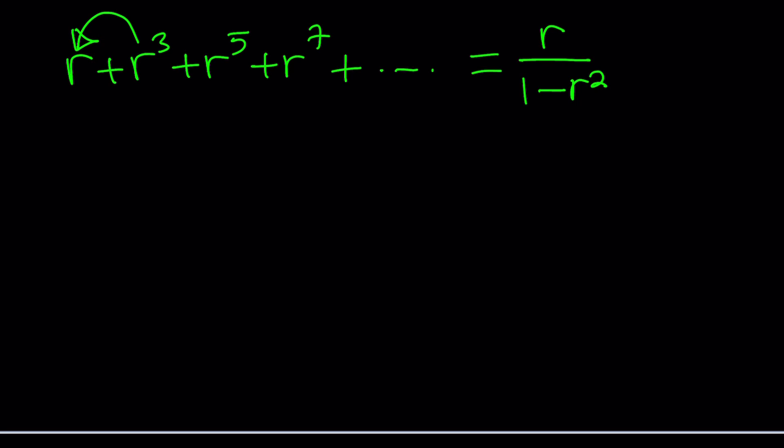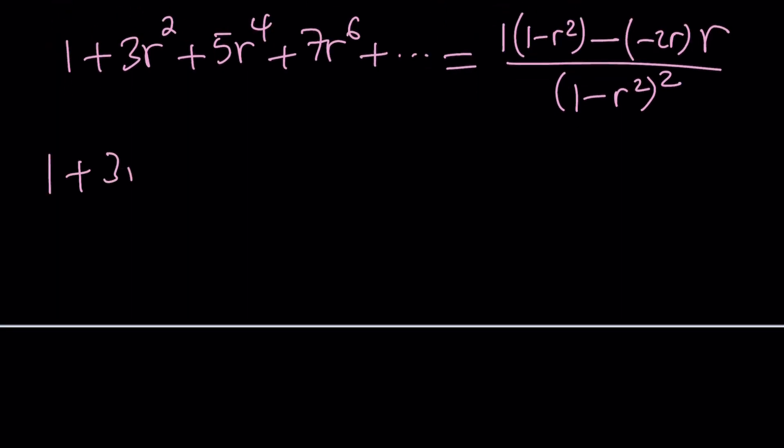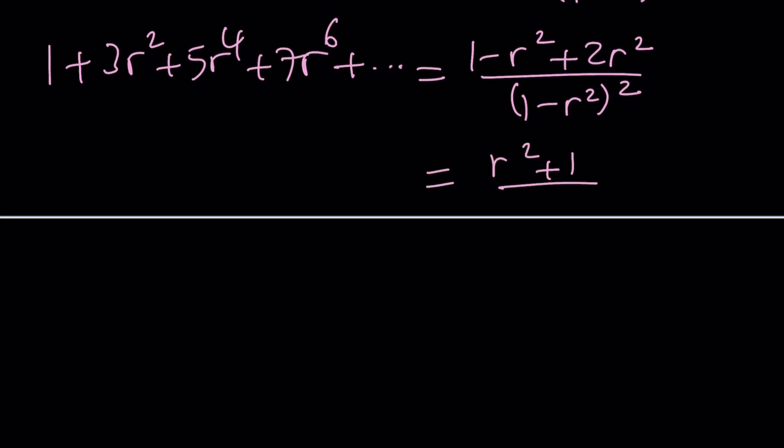Now we're going to differentiate both sides with respect to r. When we differentiate we're going to get something very nice on the left because that's going to turn into 1 plus 3r squared plus 5r to the fourth plus 7r to the sixth and so on. And on the right hand side we need to use the quotient rule. You differentiate r multiply by the denominator minus you differentiate the denominator which is negative 2r multiply by the numerator which is r and divide by the denominator squared. Let's simplify this. It's going to look like 1 minus r squared plus 2r squared divided by 1 minus r squared squared. We can simplify the numerator and that becomes r squared plus 1 divided by 1 minus r squared squared.